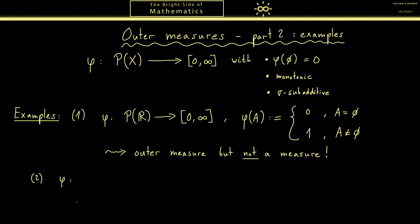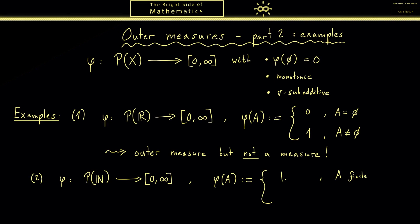The next example is also not a hard one. Now let's choose the natural numbers for the set X. The definition is the following: in the case that A is a finite set, we count the elements — denoted with bars — which is the cardinality of the set. If A is not finite, we use the symbol infinity. This gives us again an outer measure, which is not hard to check because we just count elements.